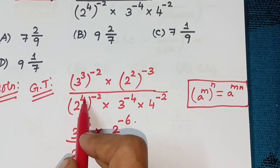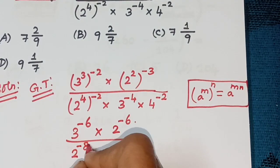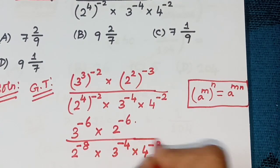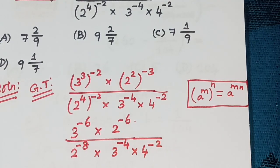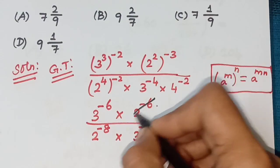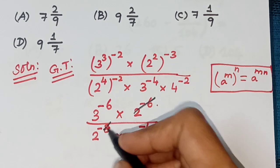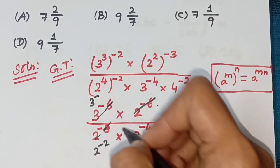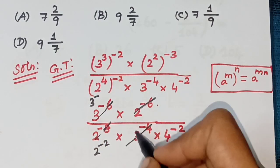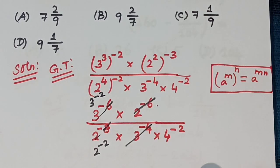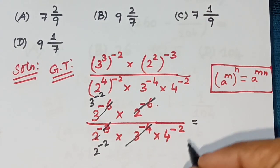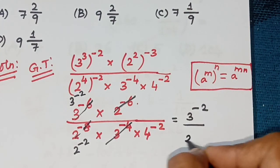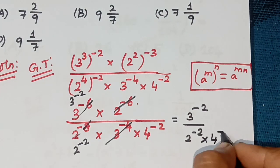Cancel values: 2^(−6) and 2^(−8) — after cancellation, remaining is 2^(−2). For 3 terms: 3^(−6) and 3^(−4) — remaining is 3^(−2). So we have 3^(−2) divided by 2^(−2) times 4^(−2).